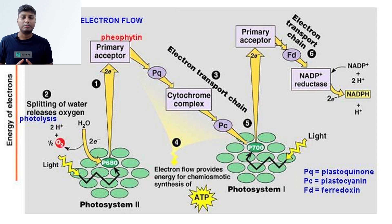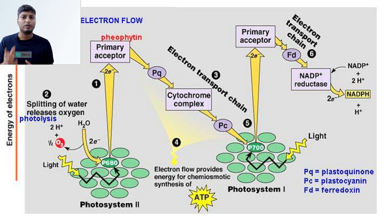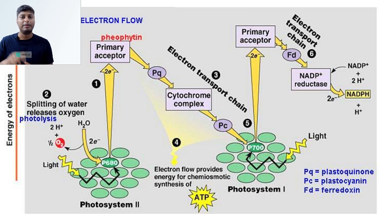Now let's talk about non-cyclic photophosphorylation. In non-cyclic photophosphorylation, another photosystem is involved — PS2. In PS2, the chlorophyll a pigment absorbs sunlight at 680 nanometers. Remember the difference: in PS1 chlorophyll a absorbs at 700 nanometers, whereas in PS2 chlorophyll a absorbs at 680 nanometers.